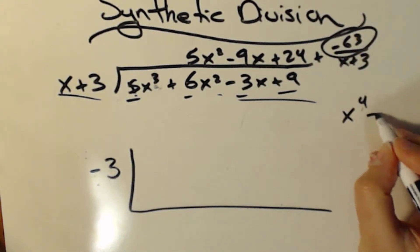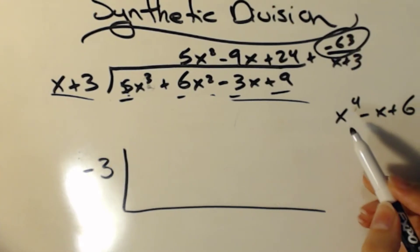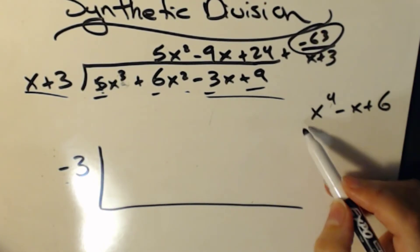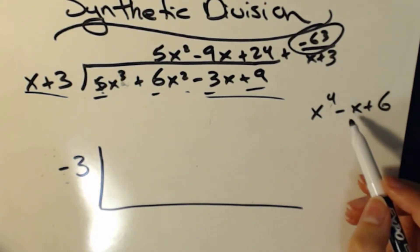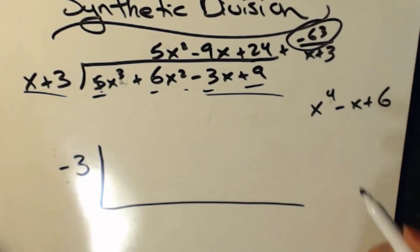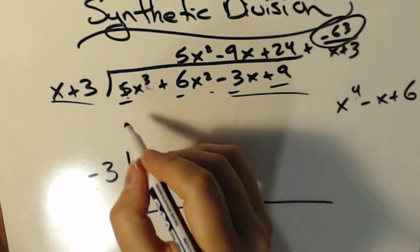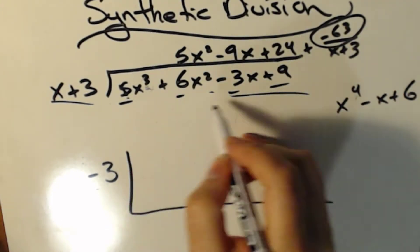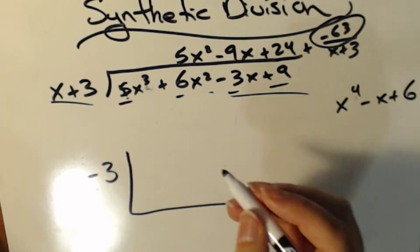And then inside a little box thing, I'm going to put all of my coefficients. And it's really important, A, to make sure that they're in descending order, just like it is with long division. And B, to make sure that any coefficients that are missing, we put in a 0 for. So this one is just descending order, right? It's already set up. We're not skipping anything.